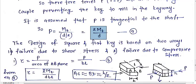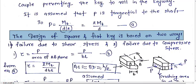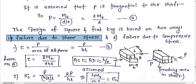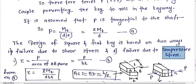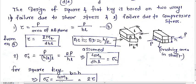The design of square and flat key is based on two ways: failure due to shear stress and failure due to compressive stress.